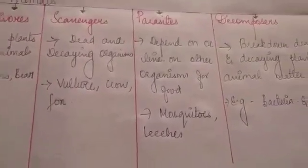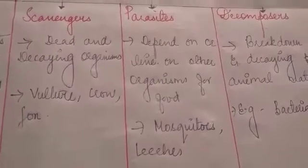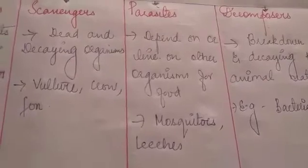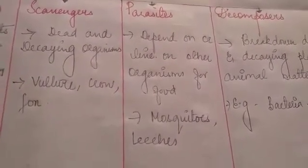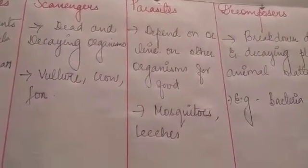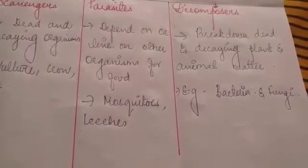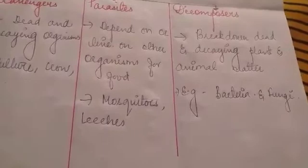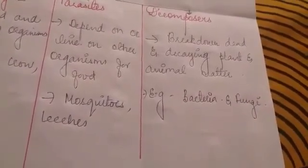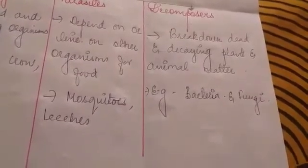Scavengers are animals which feed upon dead and decaying organisms — for example, crow, vulture and fox. In a way they clean our environment, preventing foul smells from dead organisms. Parasites are organisms which depend either fully or partially on other organisms for their food — examples are mosquitoes and leeches. Decomposers break down dead and decaying plant and animal matter, also cleaning our environment — examples are bacteria and fungi.